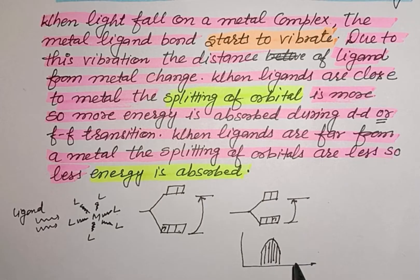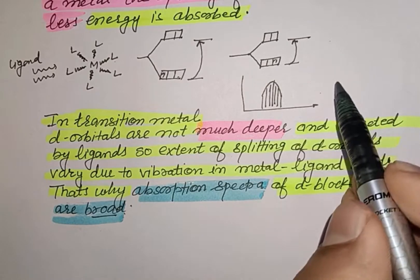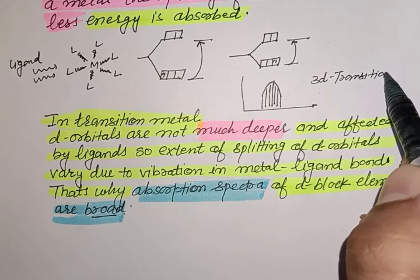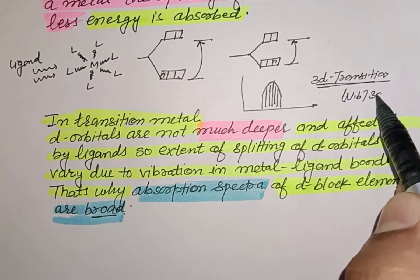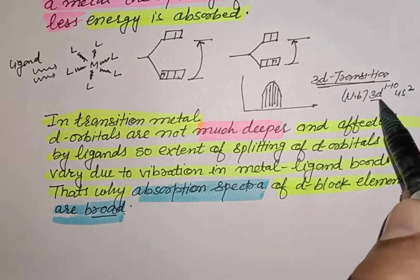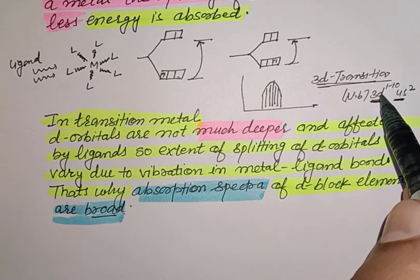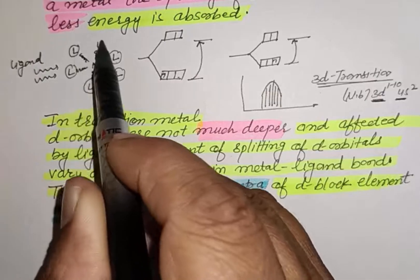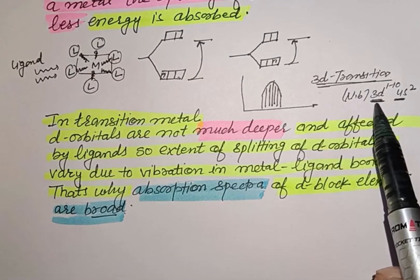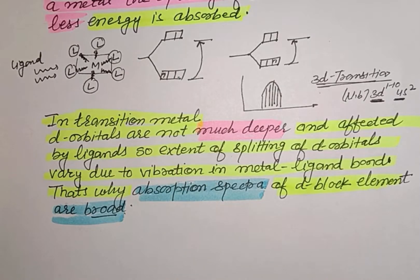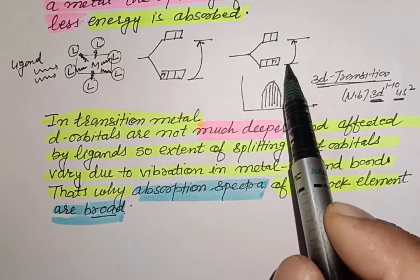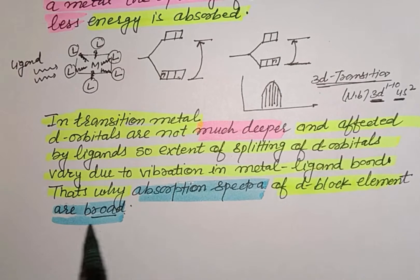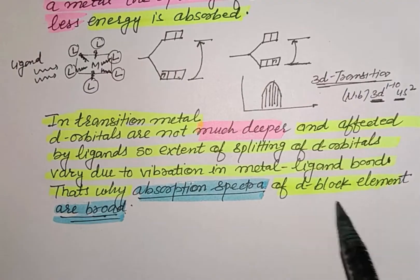This happens in the case of transition metals. If we look at the electronic configuration of 3D transition metals, it is: [noble gas] 3d¹⁻¹⁰ 4s². The d-orbitals are not very inner or deep, which is why ligands can easily interact with and affect the metal's d-orbitals. Due to vibration in the metal-ligand bond, the energy extent of these d-orbitals is affected and a large number of energy states are formed, so absorption occurs over a large range of energies. That is why the absorption spectrum of transition metals is broad.